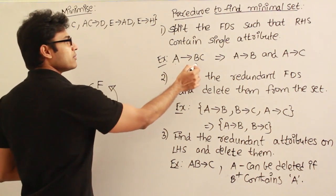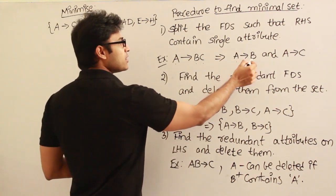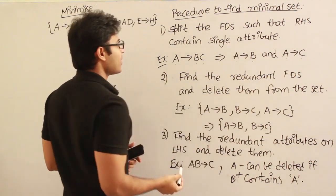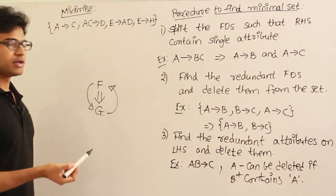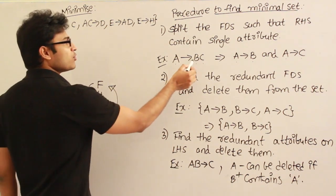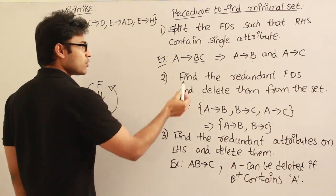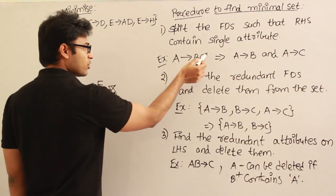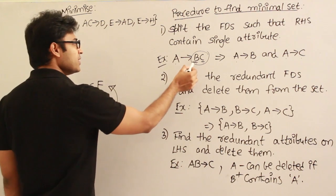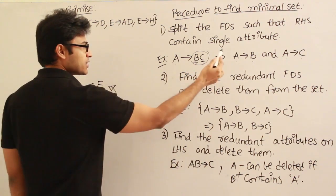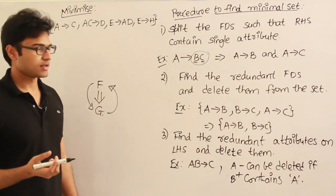If I have A determines BC, then break it into A determines B and A determines C. Why is this important? By breaking it this way, we can determine whether we could remove B or C or both. If I have both combined, I will not be able to test if B is redundant or C is redundant independently. Once I split it, I can test if B is redundant or C is redundant independently.